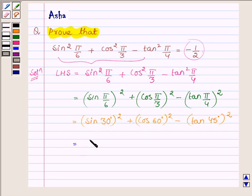Now sin 30 degree is half, half whole square plus cos 60 degree is again half minus tan 45 degree is 1.